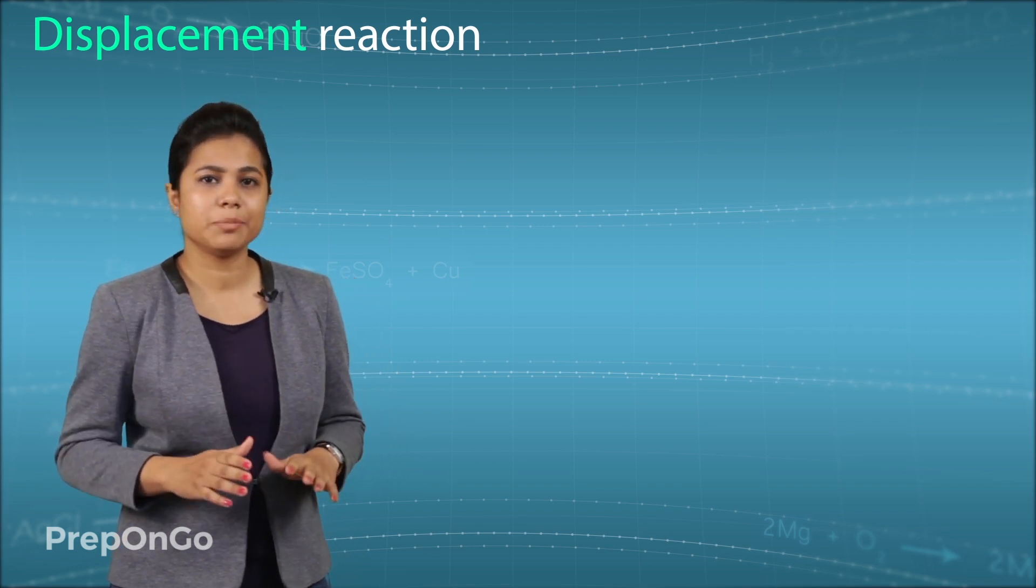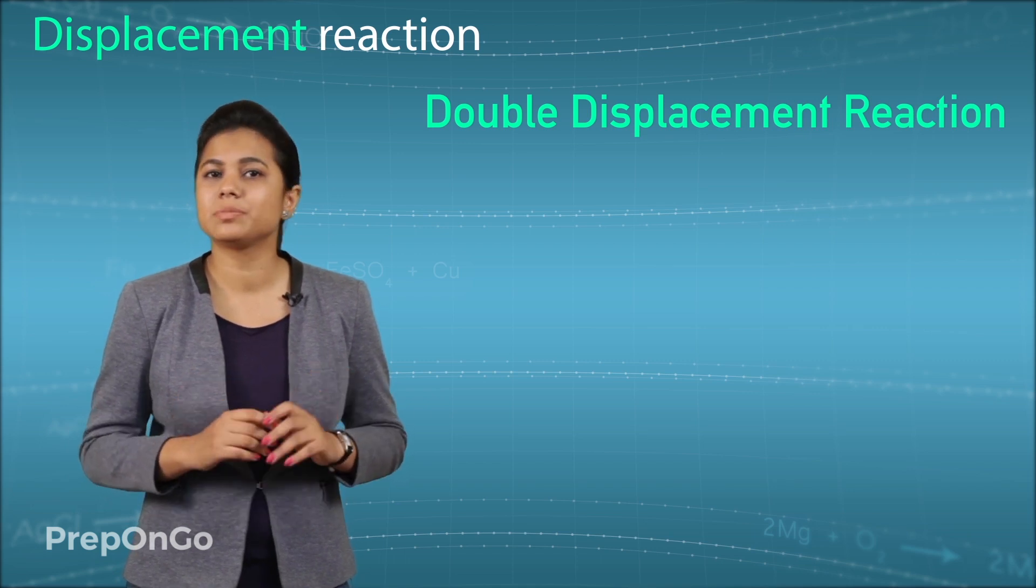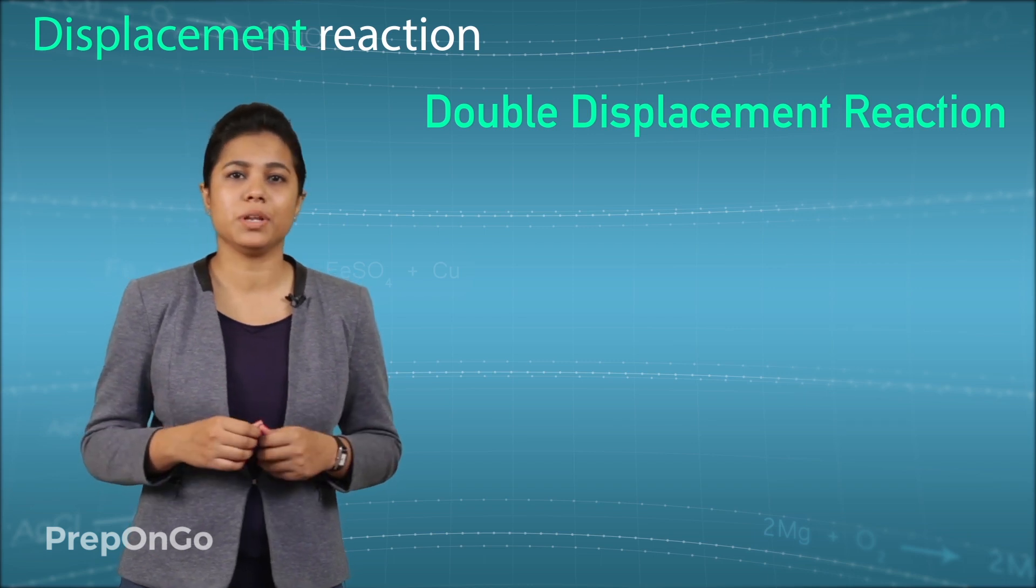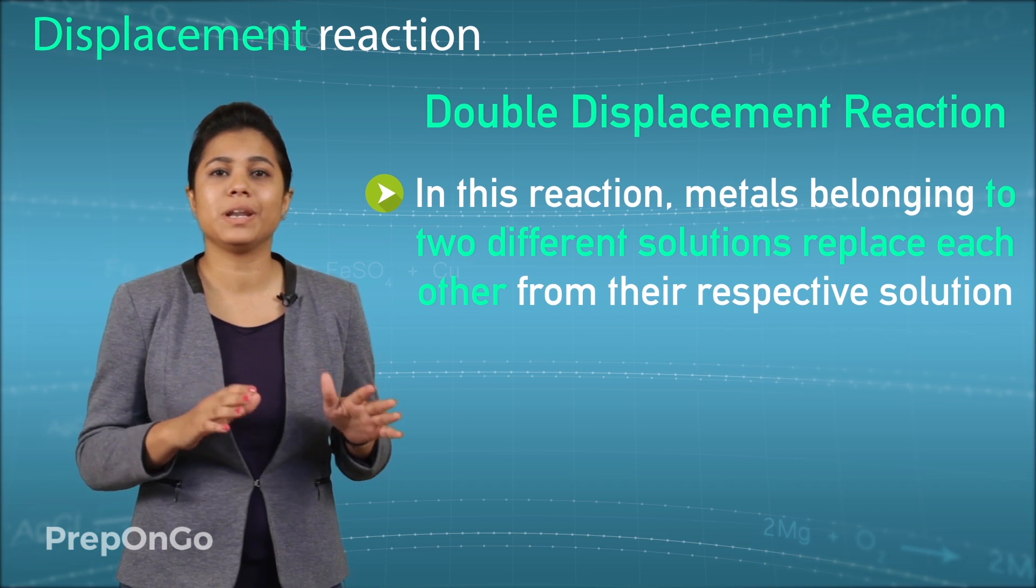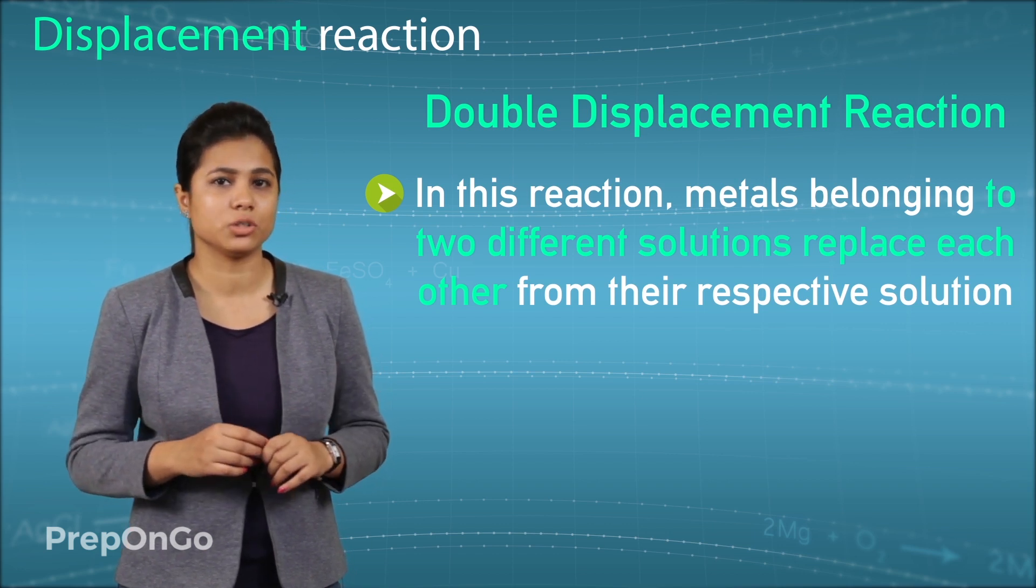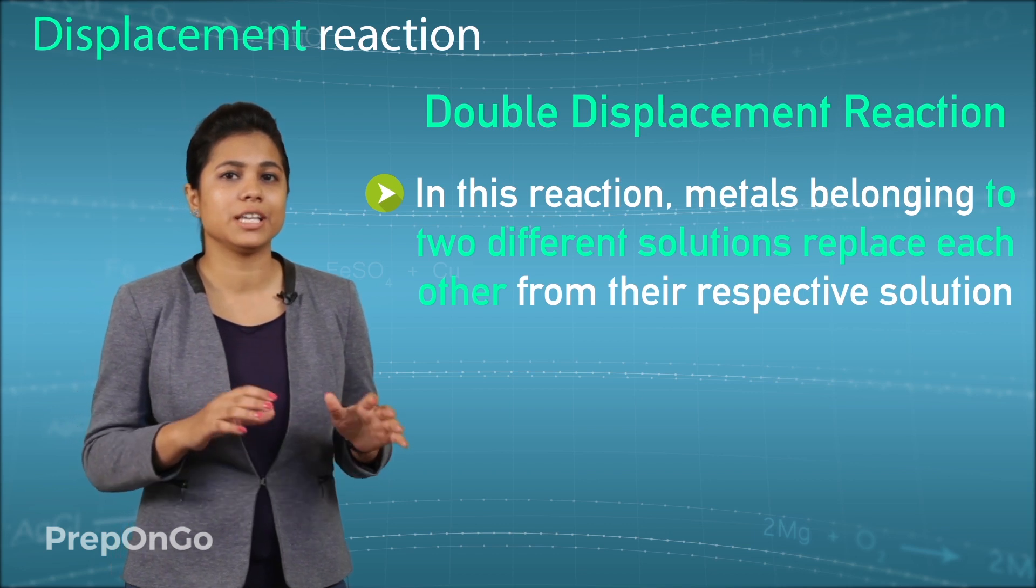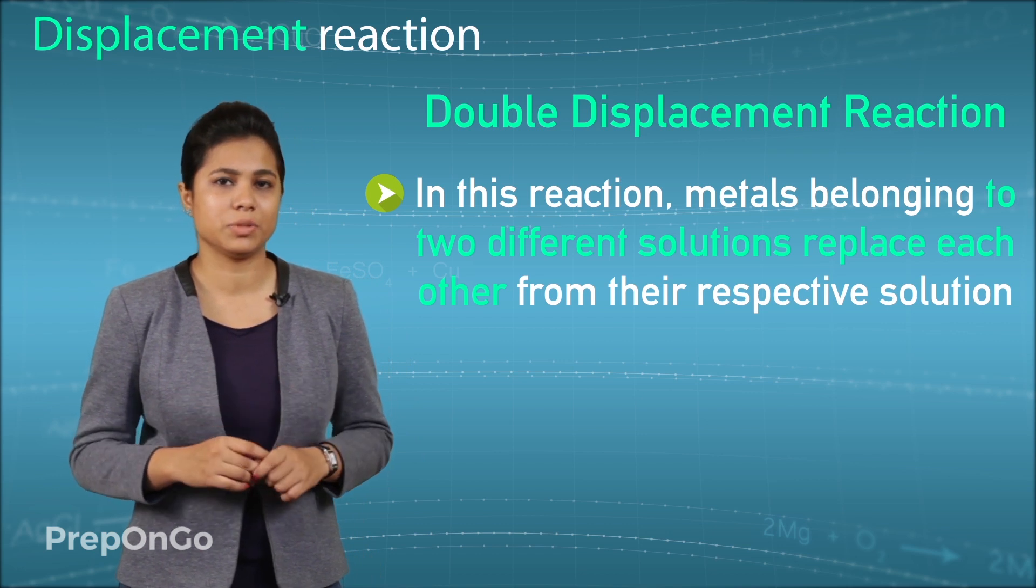Now there is another type of reaction which we call a double displacement reaction. Now double displacement reaction follows a very simple rule which says if you replace me I'll replace you. The metals belonging to two different solutions replace each other from the respective solution. In such type of reaction exchange of ions takes place between the reactants, and this type of reaction we call a double displacement reaction.